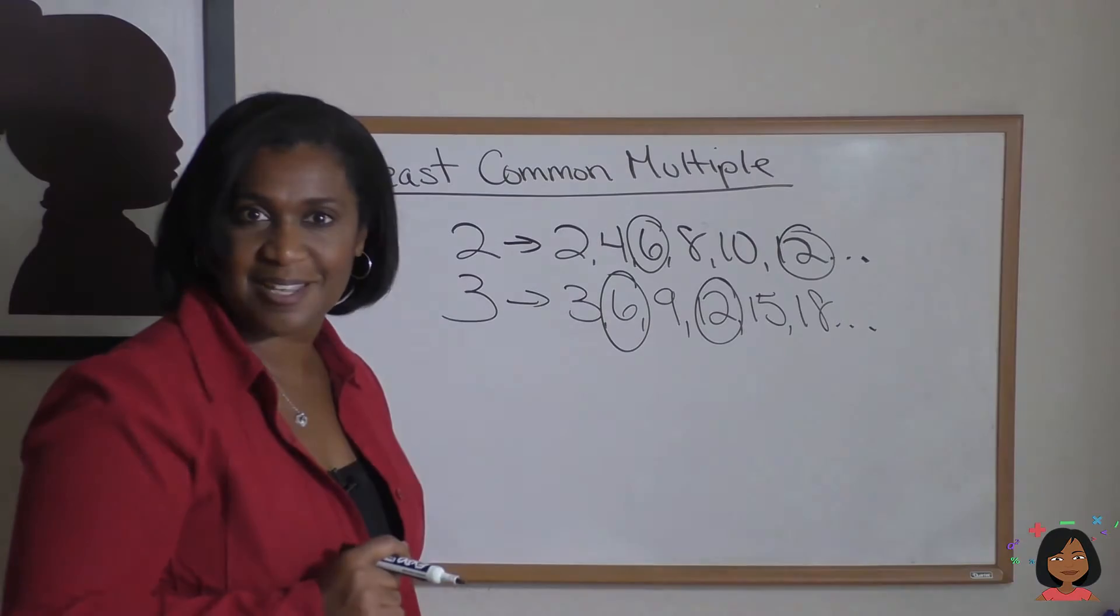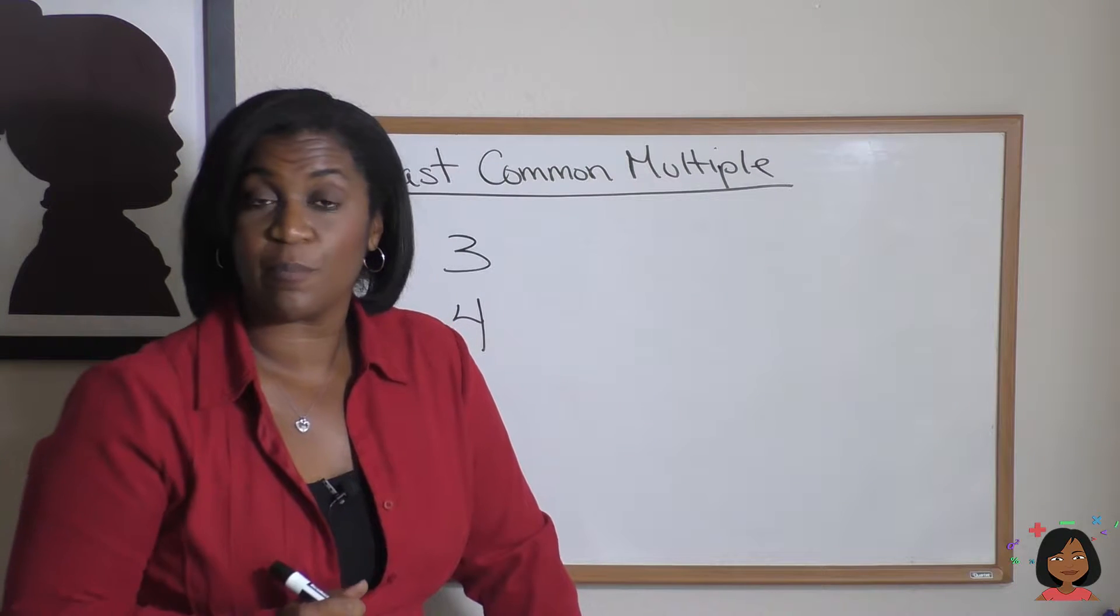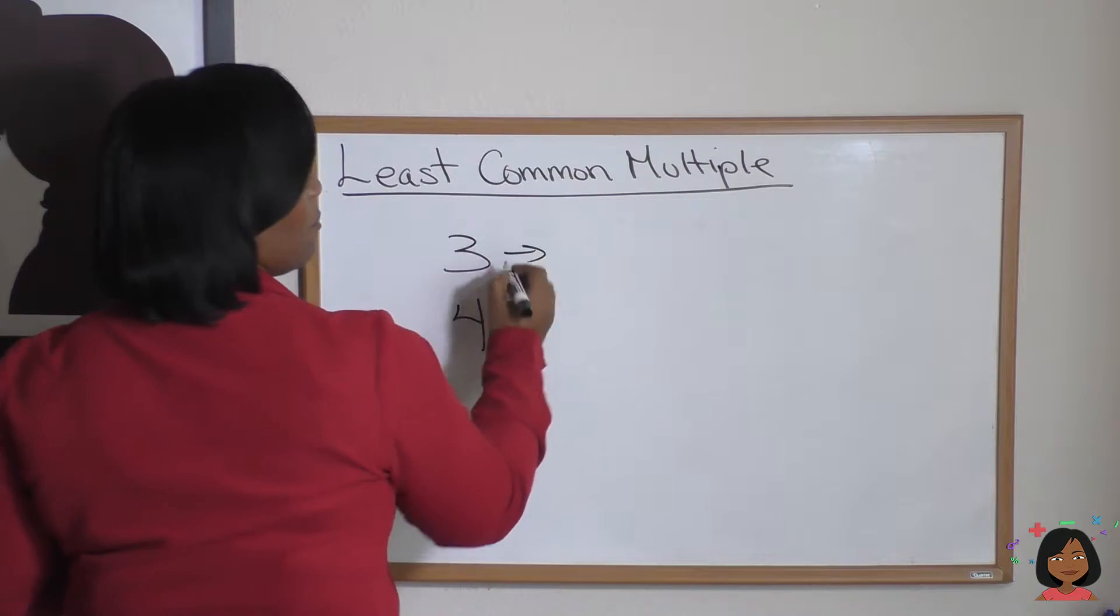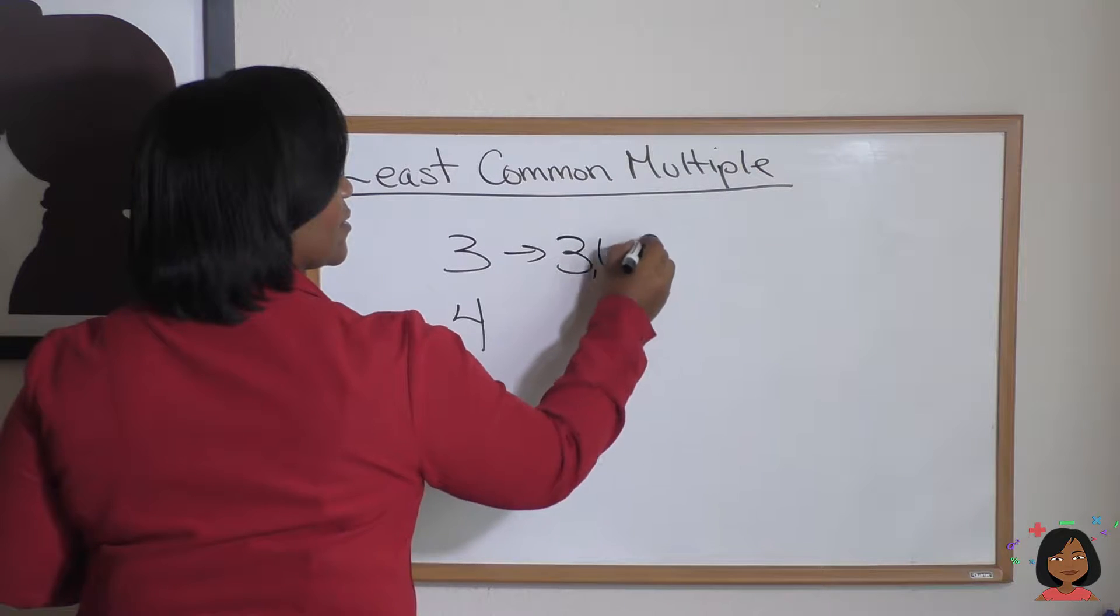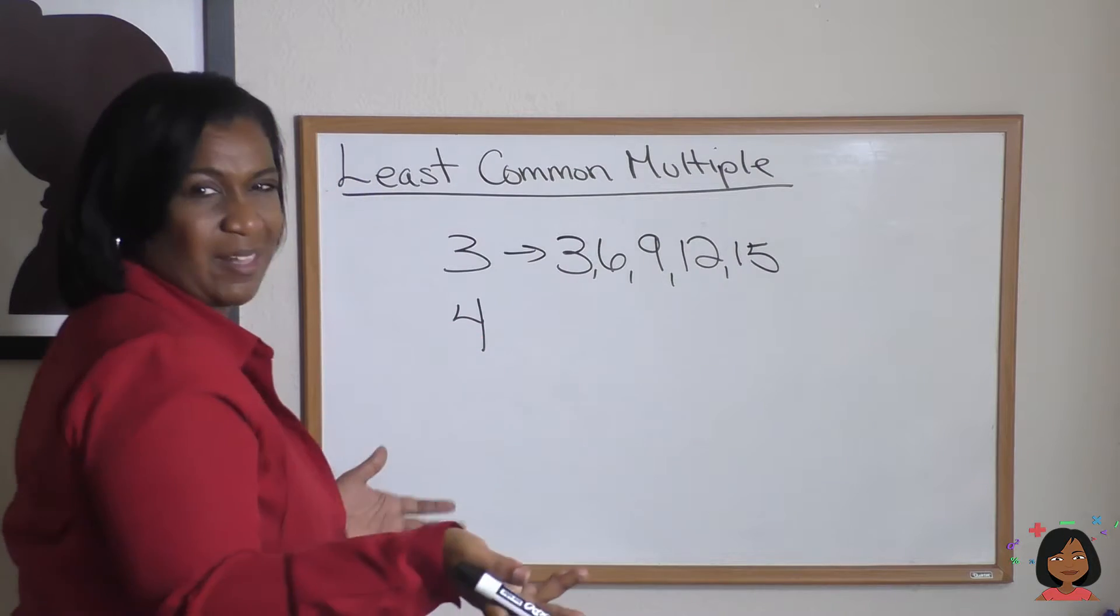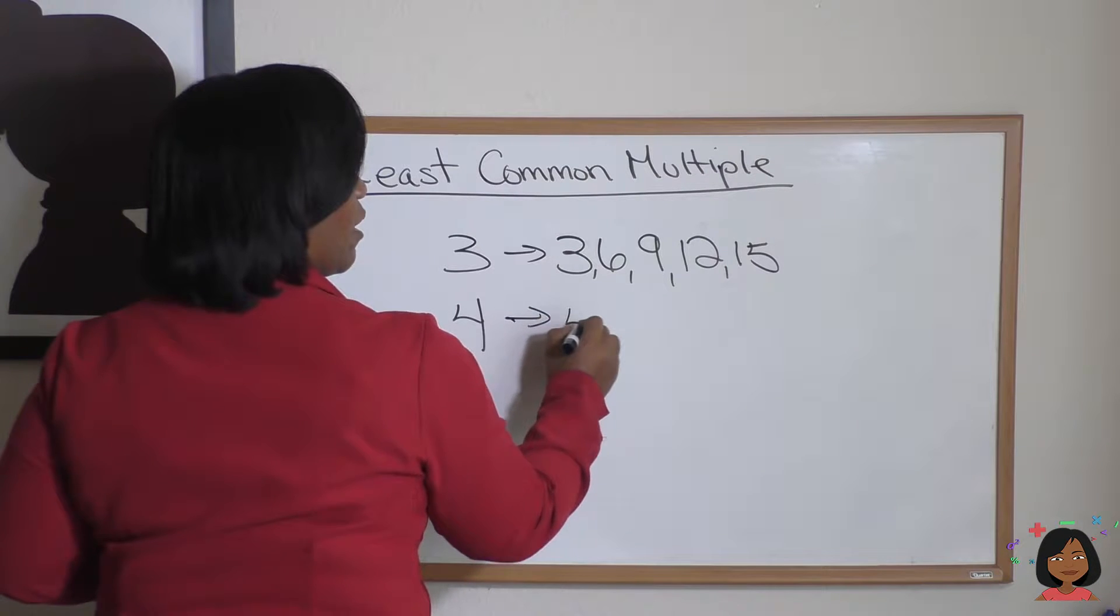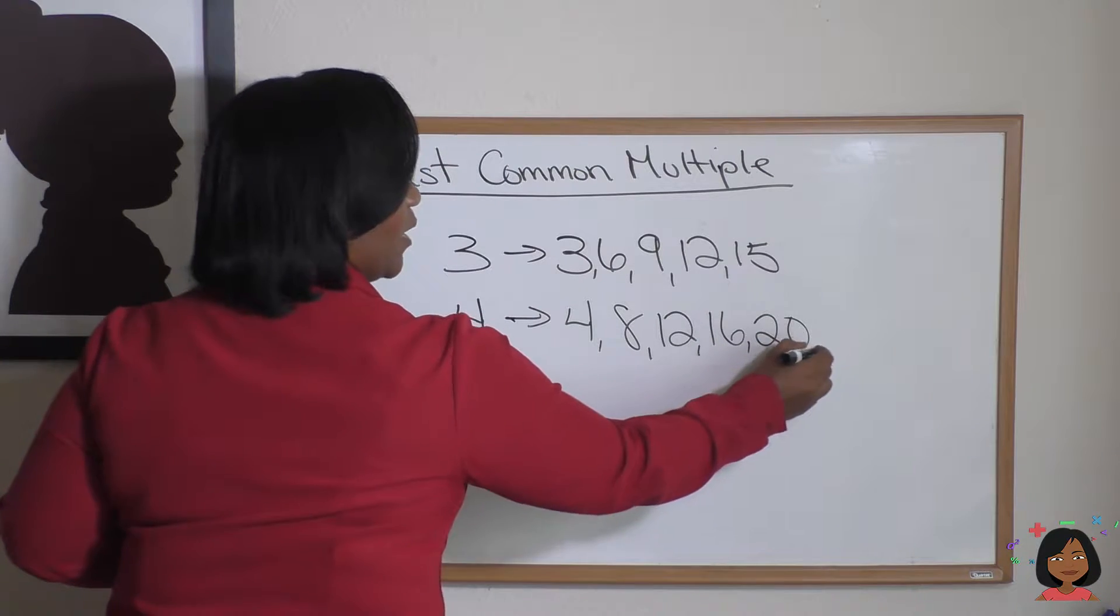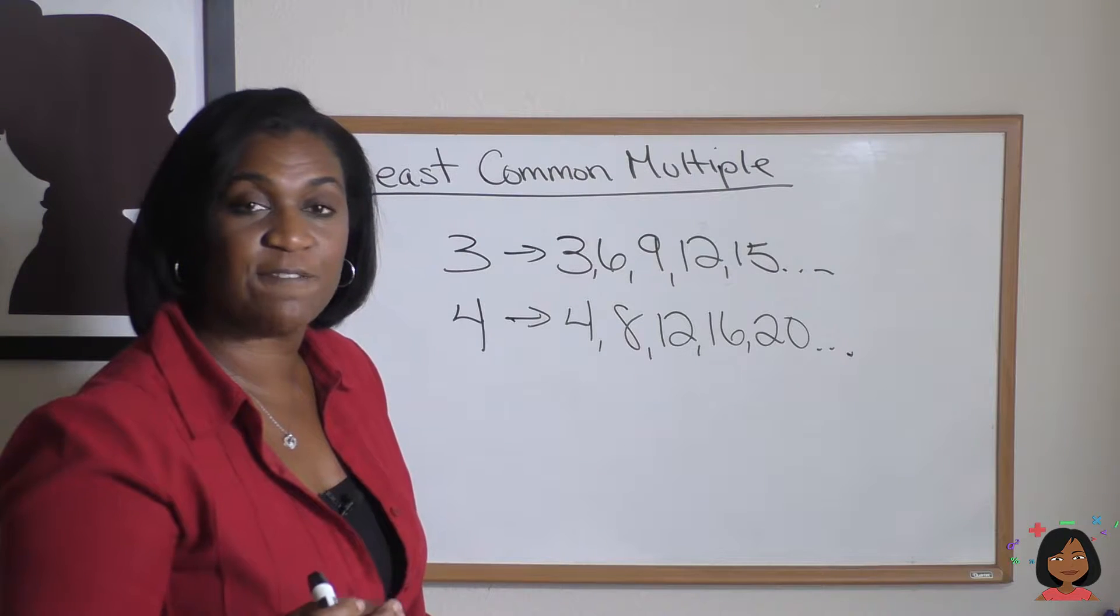So if I asked you what's the least common multiple of the number three and the number four, again it's like doing our times tables. Let's do three. The multiples of three are three, six, nine, twelve, fifteen. Let's go to number four. The multiples of four are four, eight, twelve, sixteen, twenty. Let's check our list and see if we can find a least common multiple they both have in common.